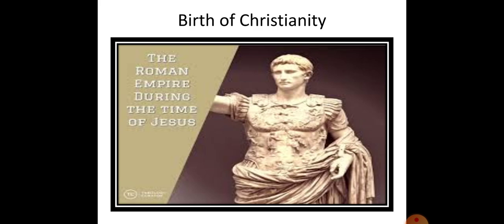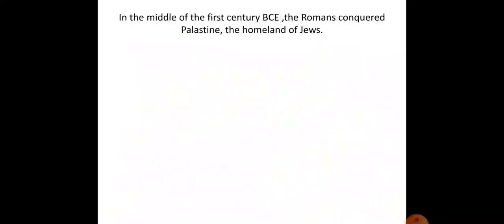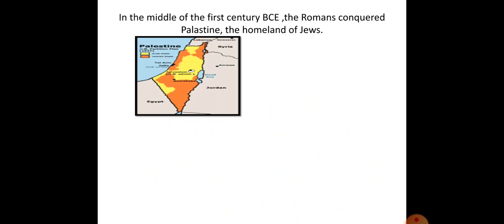Let us know how Christianity came up, or what was the birth of Christianity in the world. At that time, the Roman Empire was one of the greatest in Europe. In the middle of the 1st century, the Romans conquered Palestine, the homeland of the Jews. This event took place in the 1st century.